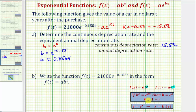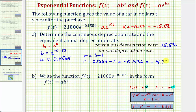To determine the value of r: since b equals one plus r, r is equal to b minus one. So r equals 0.8564 minus one, which equals negative 0.1436, or negative 14.36% as a percentage. Because r is negative, we again have exponential decay, and the absolute value of r gives us the annual depreciation rate of 14.36%. This tells us that a continuous depreciation rate of 15.5% per year is equivalent to an annual depreciation rate of 14.36% per year.